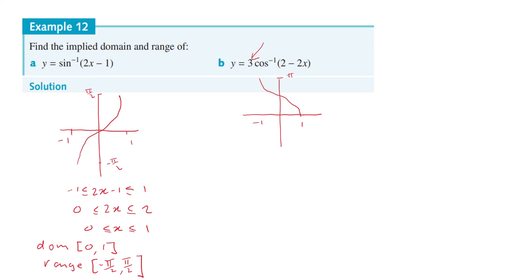So the range instead of being between 0 and π, the range will become between 0 and 3π. Okay, so we can do that part already. The range will be 0 to 3π.